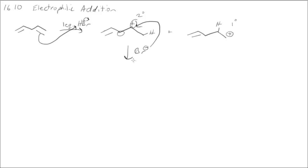In the second step the bromide adds, and you get the product. You can do the same thing with the other alkene, but this molecule is symmetrical — there is a plane of symmetry right down the middle — so you get the exact same product. There is really only one product of this reaction.